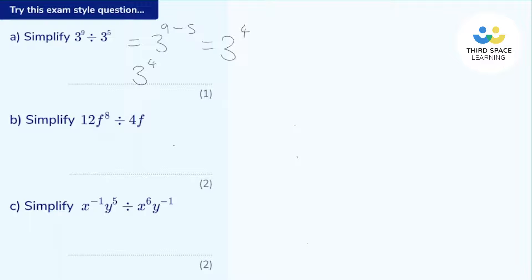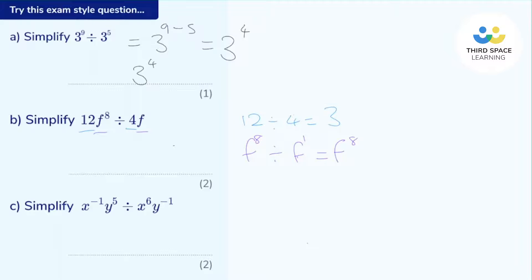Pause the video for Part B and have a go. Let's go through it. Let's start with the numbers first — we've got 12 divided by four, which is three. Now let's look at those F's. We've got F to the power of eight divided by F — and remember, it's always F to the power of one. The laws of indices tell me that when I'm dividing terms with the same base, I can subtract those powers. So it's F to the power of eight subtract one, which is F to the power of seven. The answer is 3F to the power of seven.